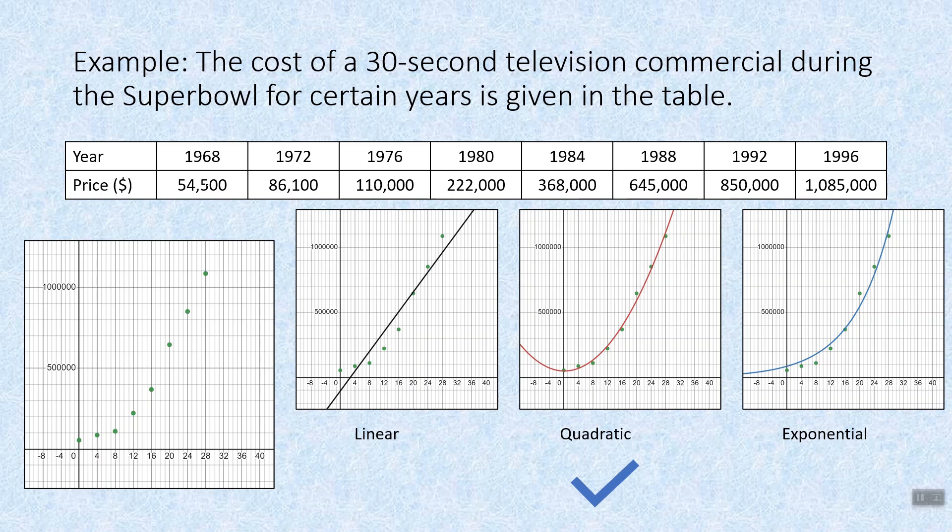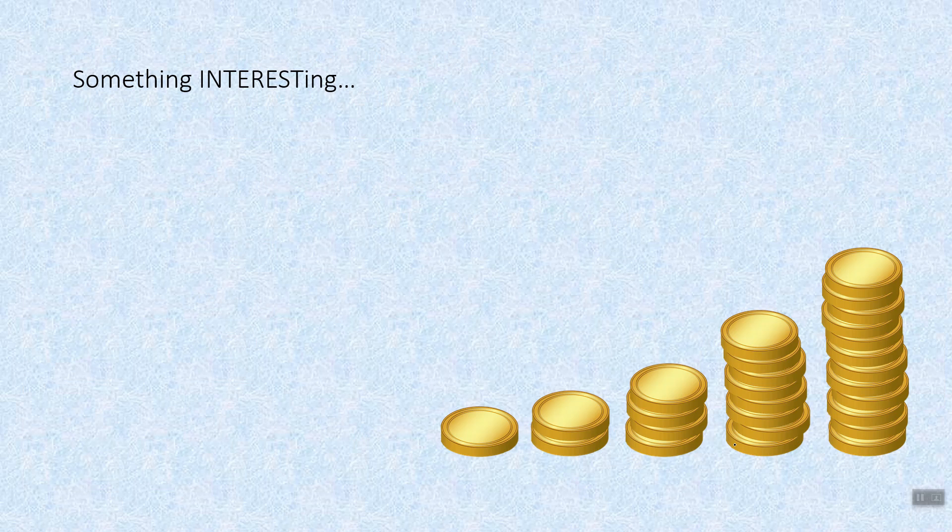So for these particular years, and we'll find that actually, right here, 1988, we had a big jump. This is actually a piecewise defined function. The cost of a 30 second Super Bowl commercial is outrageous now. And that's why I stopped and didn't go into the 2000s. But based on the data, real life data, Super Bowl commercials, we could determine what type of model it is, and then we can work with it algebraically.